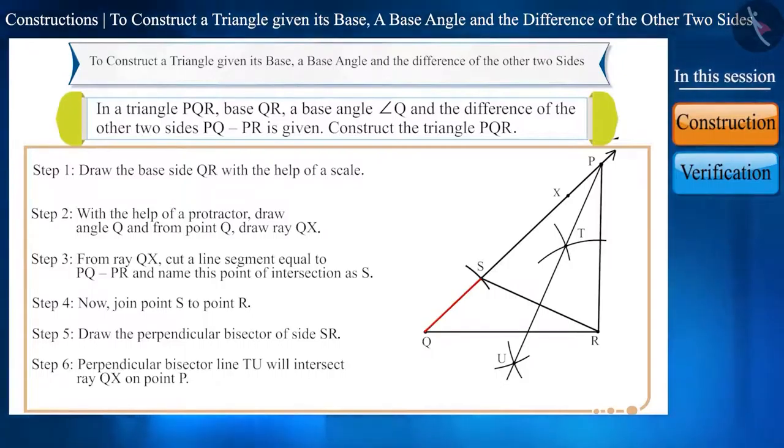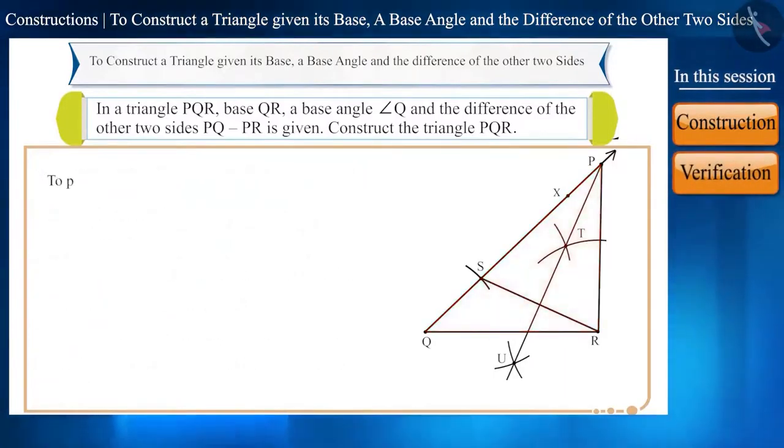Well friends, this work doesn't end just here. Now, we will check the construction of the constructed triangle. We have to prove that the length of SQ is equal to PQ minus PR, so let's prove that triangle PQR is the required triangle.